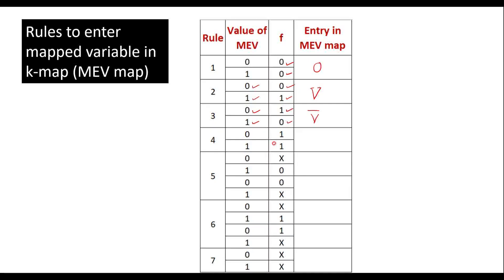Rule 4: if the function value is 1 for both values of MEV — that is, whether MEV is 0 or 1, the function value is 1 in both cases — then we enter 1 in the MEV map.